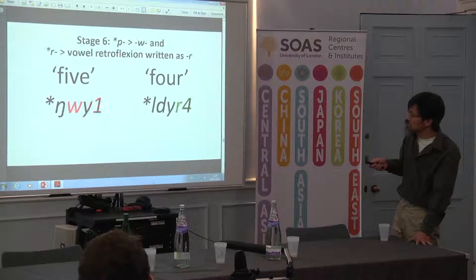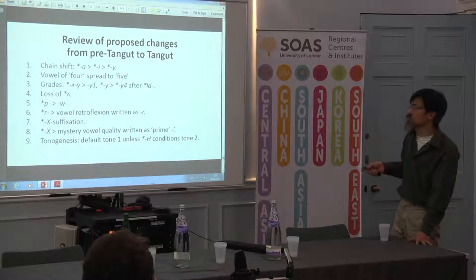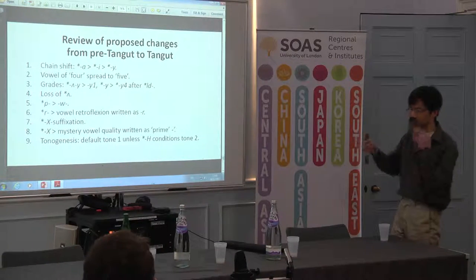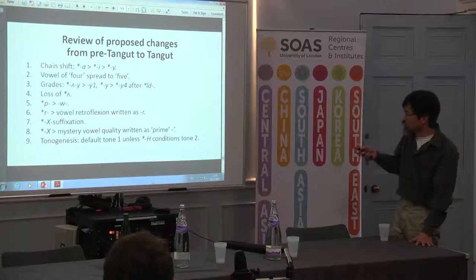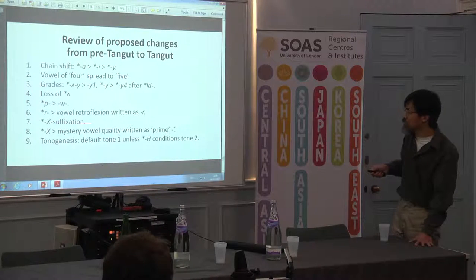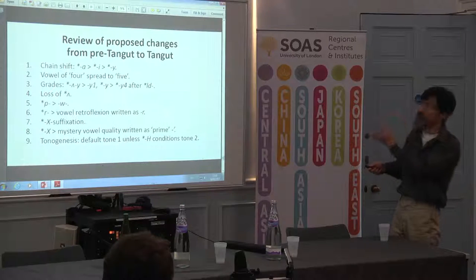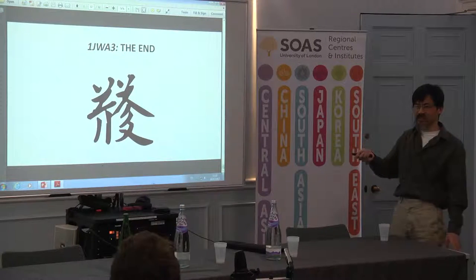My hope here is that not only have I more or less solved the problem of why five has such a strange rhyme — though now that I don't like this grade system, some revision is needed — but beyond that very specific problem, I thought it might be interesting to demonstrate some of the changes and rules in my view of the history of Tangut, using five and four as examples. And with that summary, I have come to the end. Thank you.